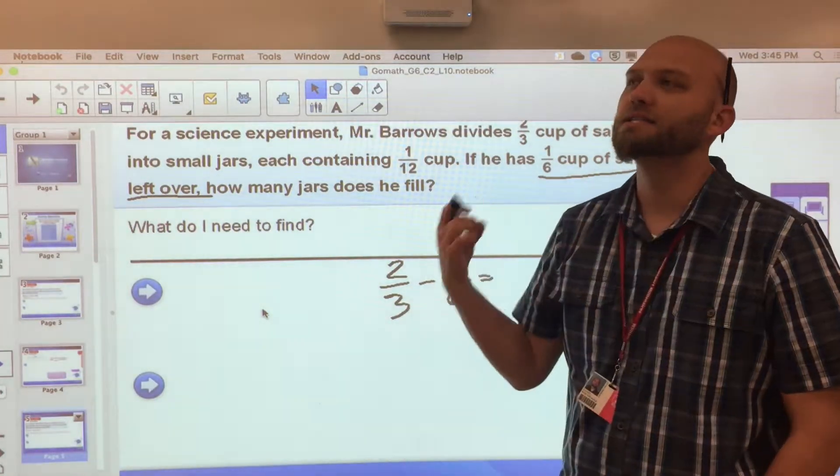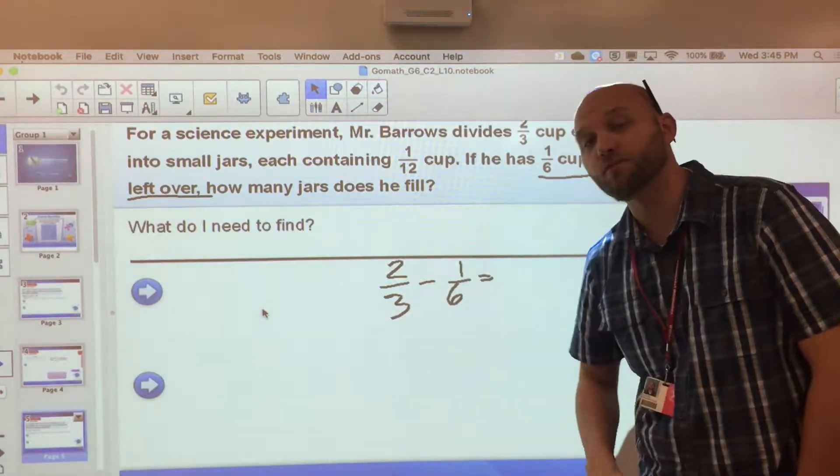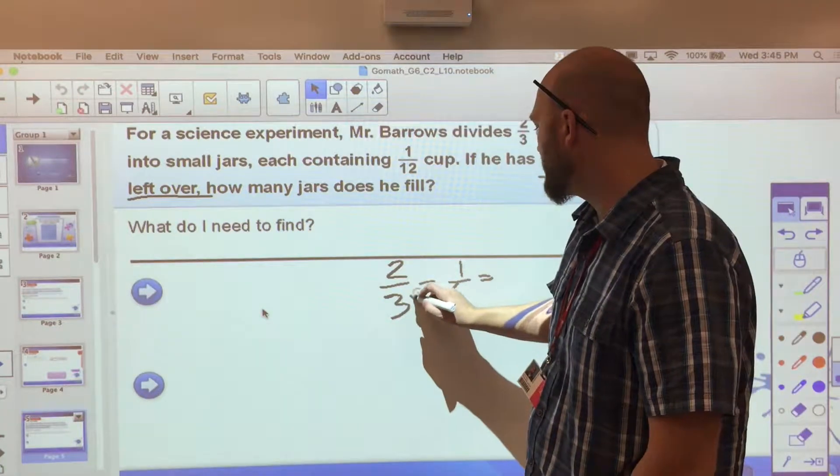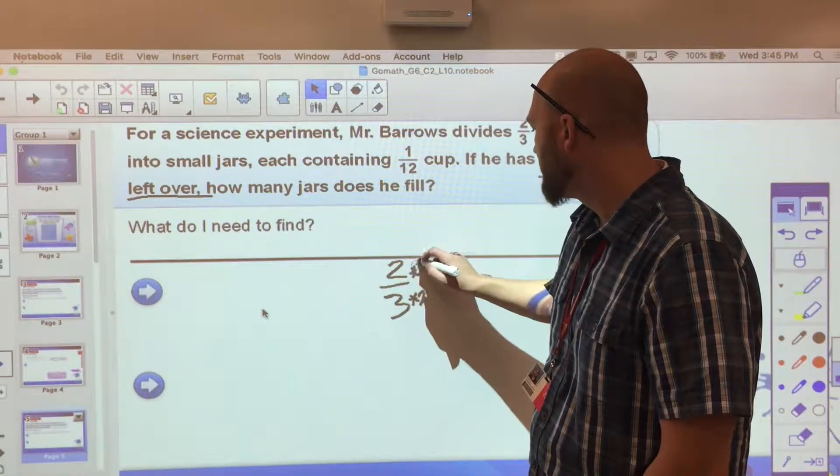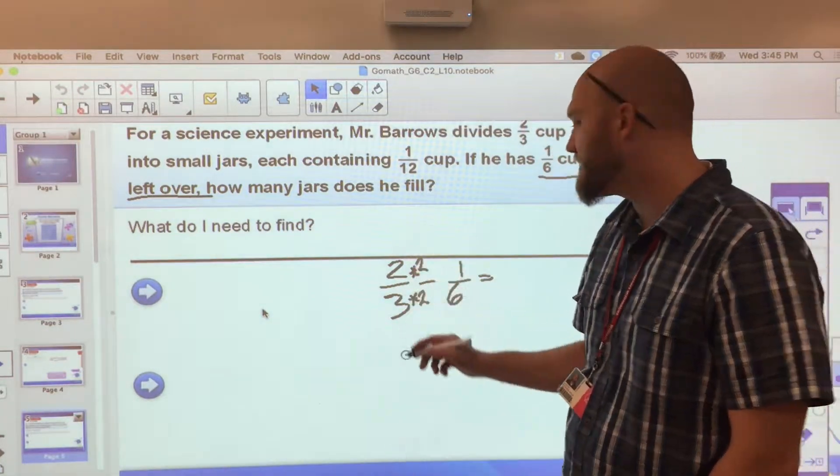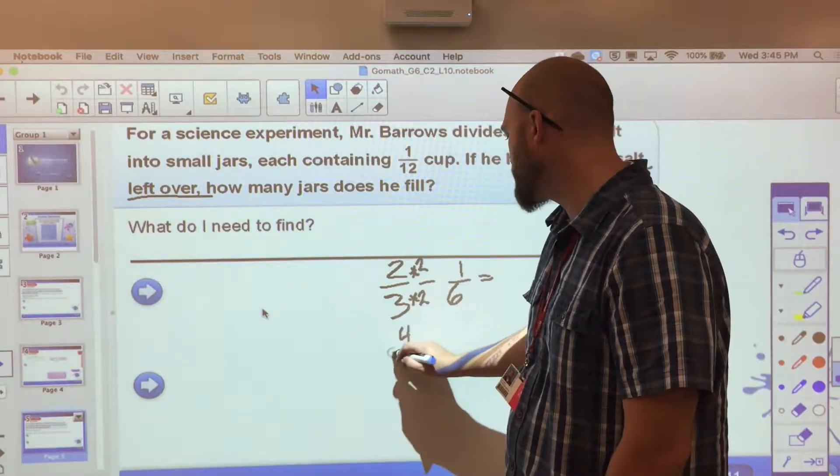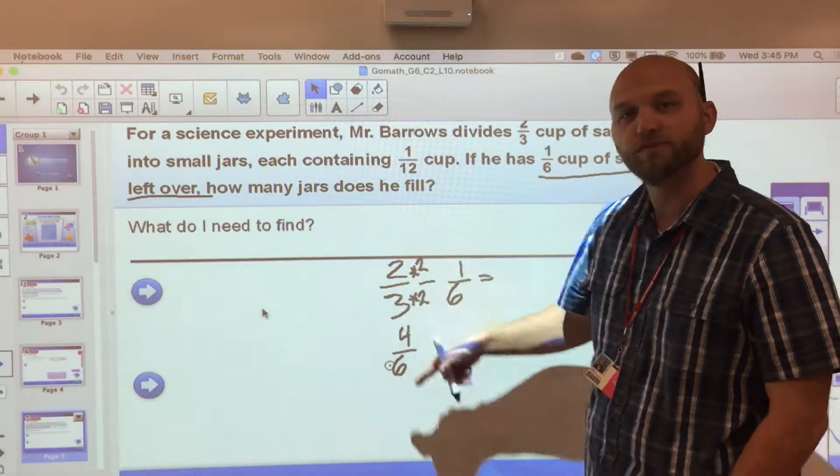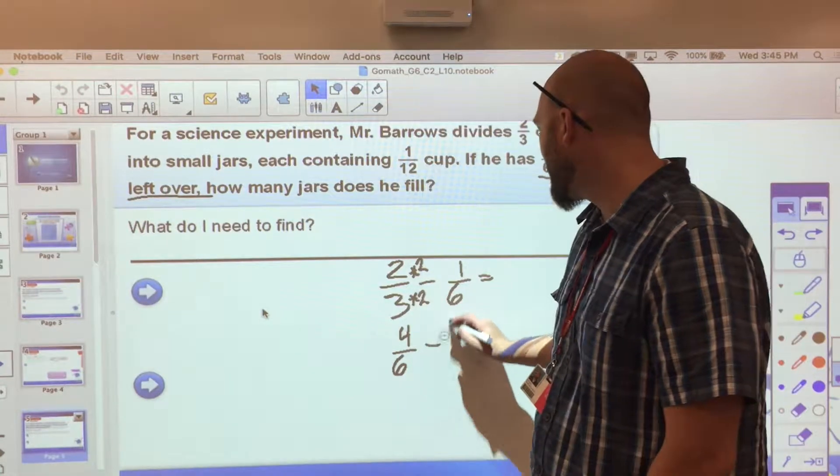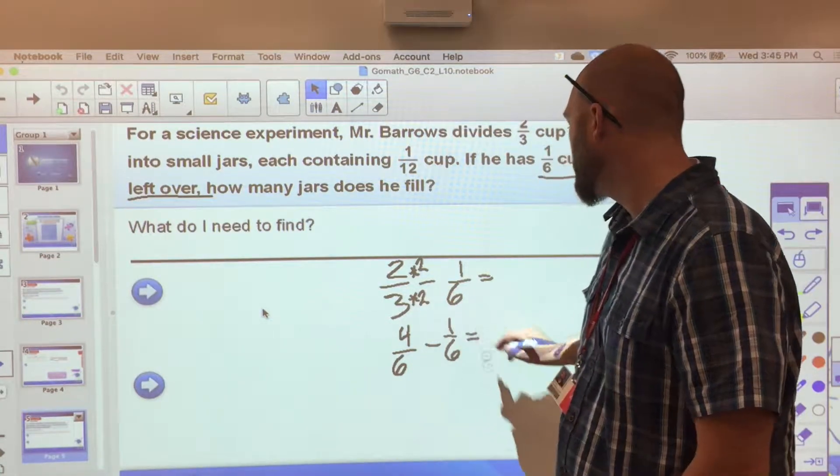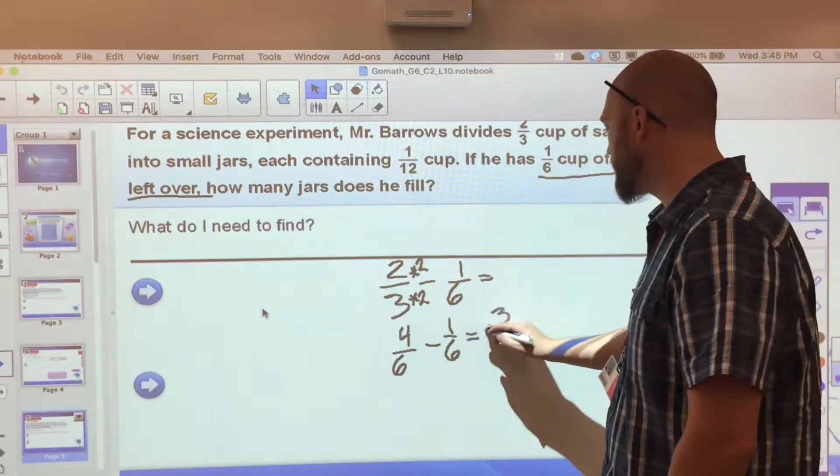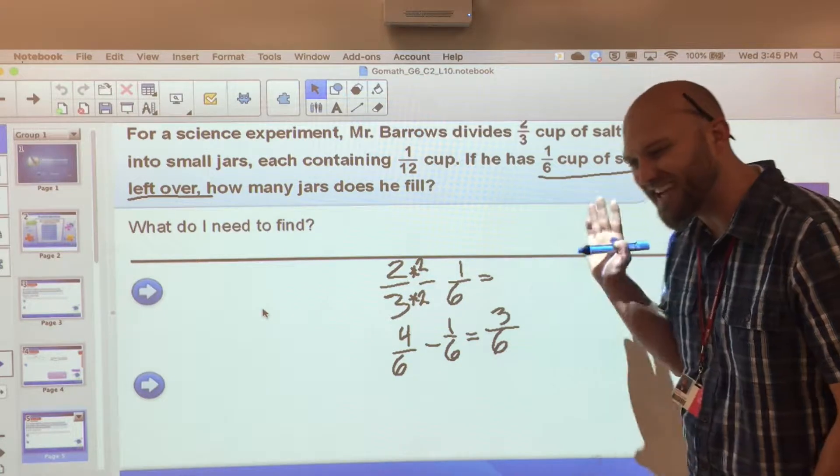I know that two-thirds and one-sixth—three and six have at least a common multiple of six. So let's just convert this by multiplying both my numerator and my denominator by two. This comes to four-sixths. That's an equivalent fraction of two-thirds minus one-sixth. Four minus one gives me three-sixths.